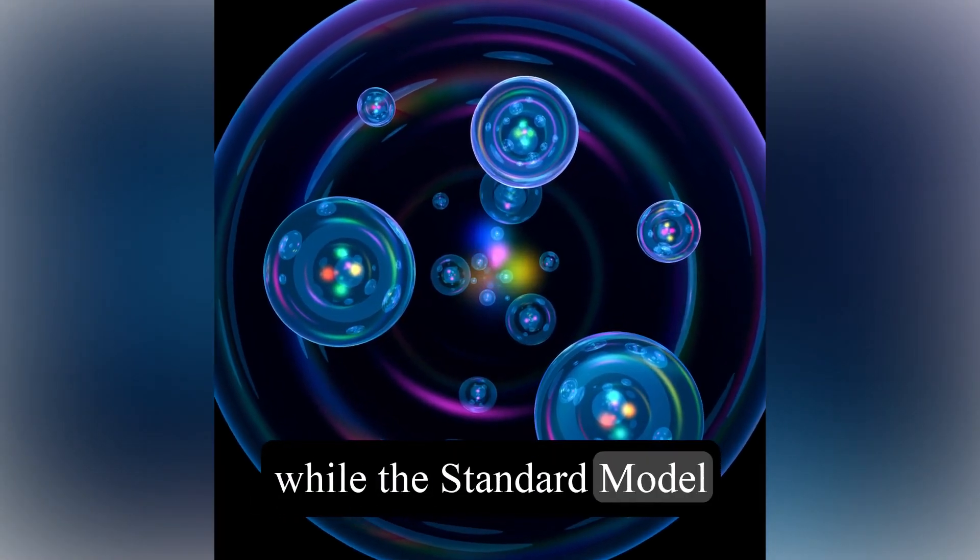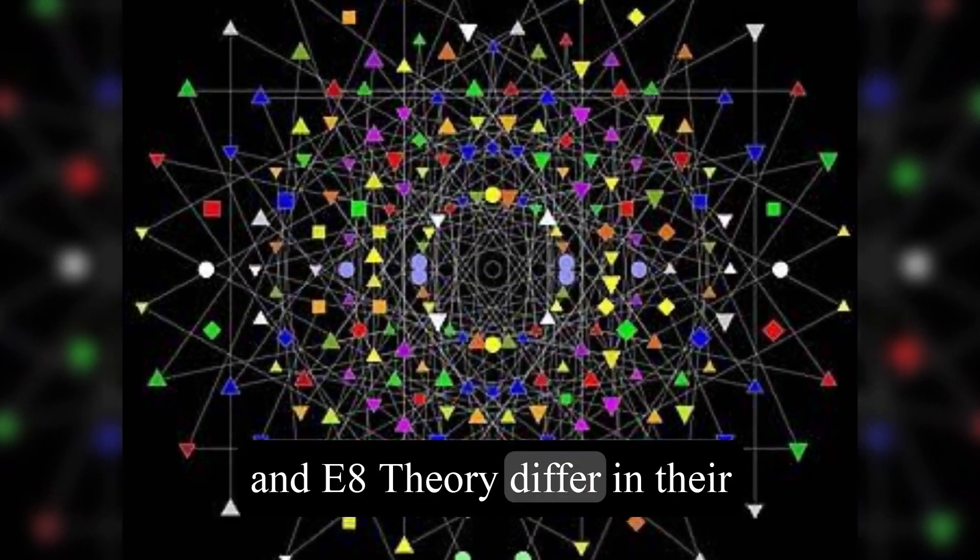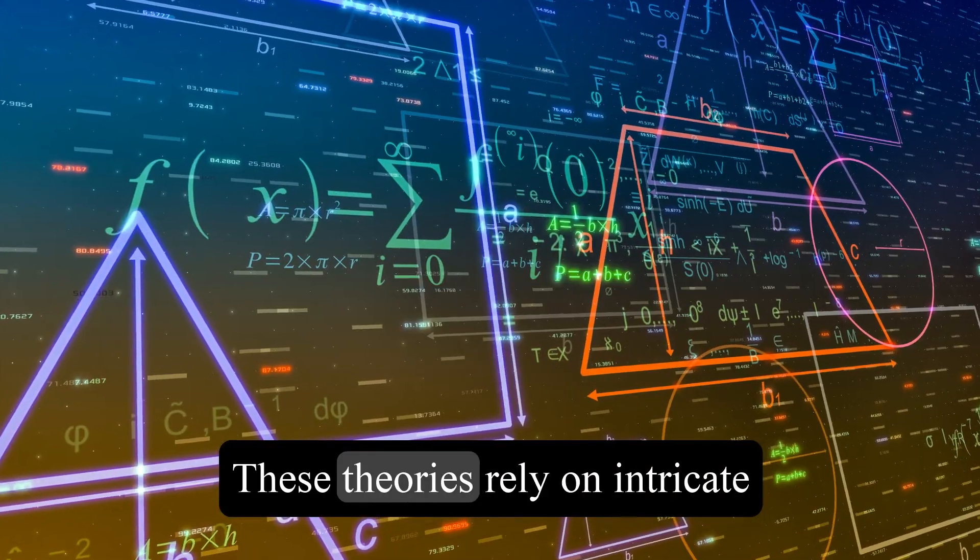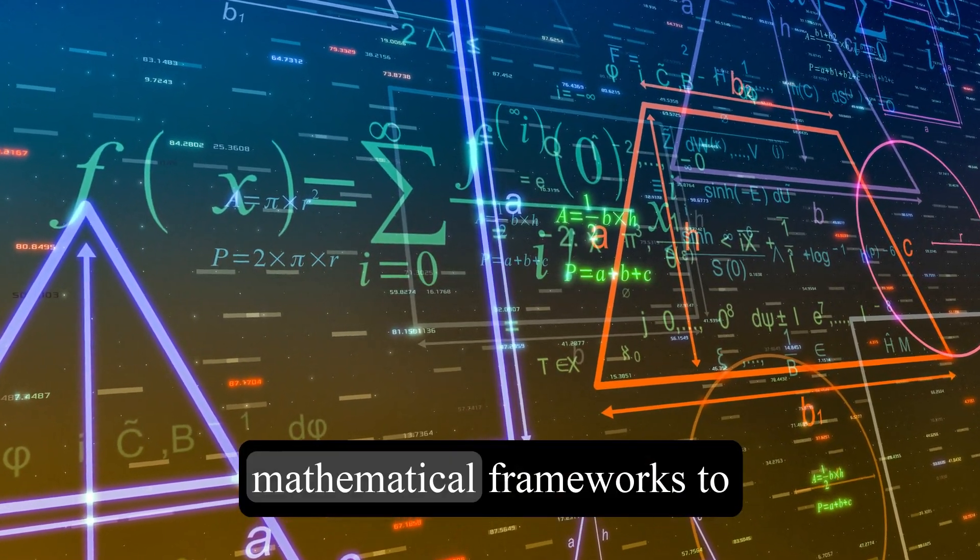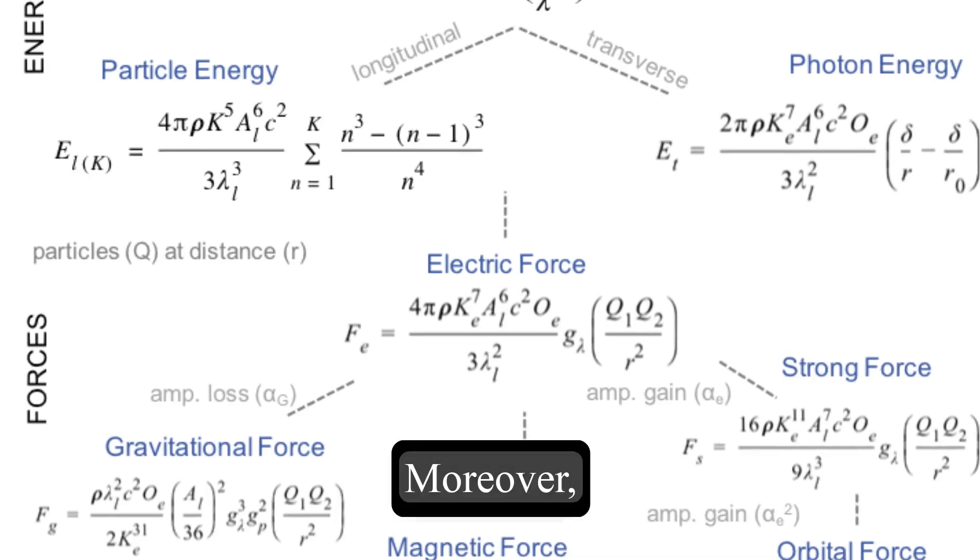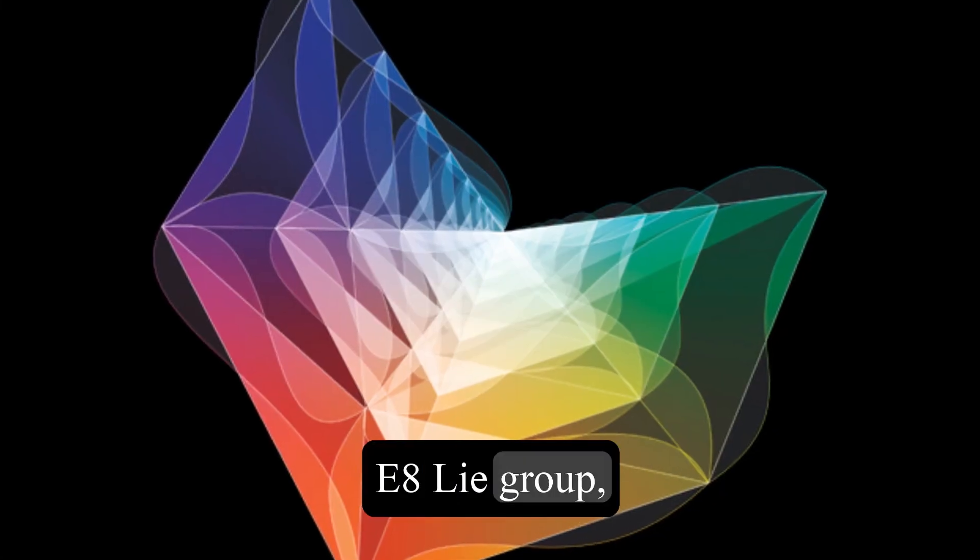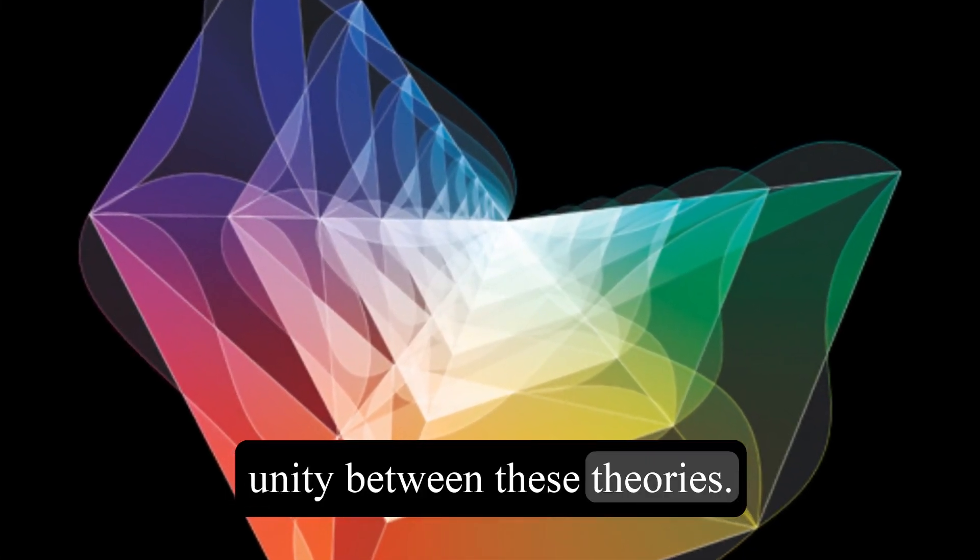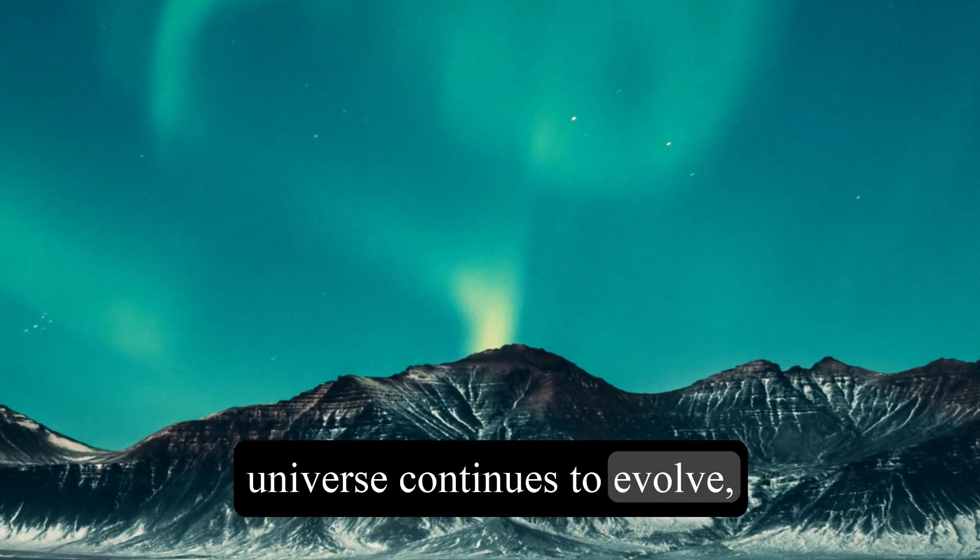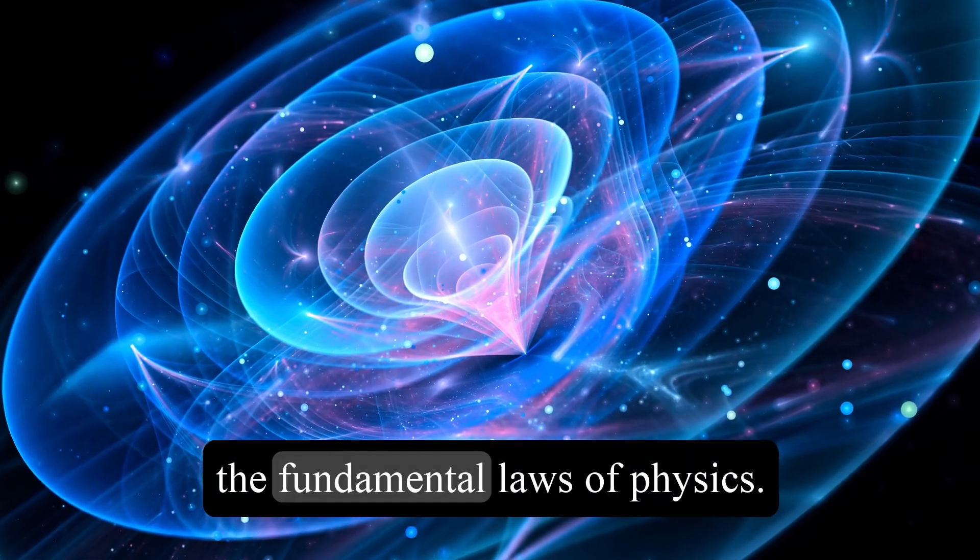In summary, while the standard model of particle physics, string theory, including M-theory, and E-8 theory differ in their approaches and focus, they share intriguing similarities. These theories rely on intricate mathematical frameworks to describe the fundamental building blocks and forces of the universe. Moreover, there is a compelling connection between the mathematics of string theory and the E-8 Lie group, potentially hinting at a deeper unity between these theories. As our understanding of the universe continues to evolve, exploring these connections could provide valuable insights into the nature of reality and the fundamental laws of physics.